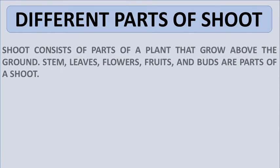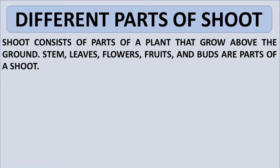Different parts of shoot. Shoot consists of parts of a plant that grow above the ground—stem, leaves, flowers, fruits and buds are parts of shoot.